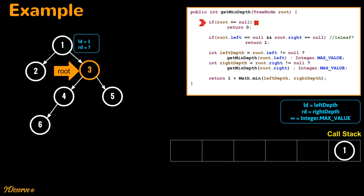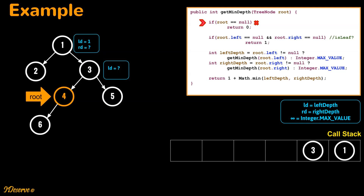Now root is pointing to node 3. We check if root is null — it is not. We check if root is a leaf — it is not, so we move on. Next we check if the left subtree of root is null — it is not, so we recursively call get min depth for the left child and store the current function state in the call stack. Now root is pointing to node 4. We check if root is null — it is not. We check if root is a leaf — it is not, so we move on.